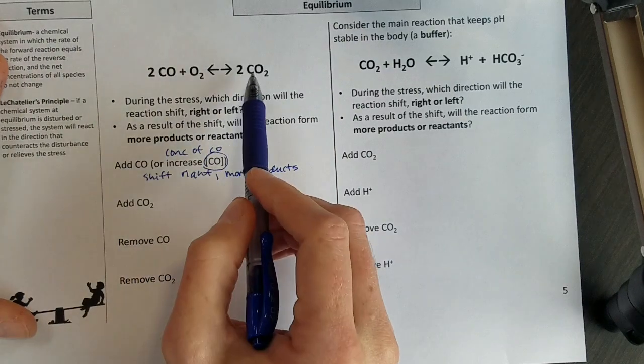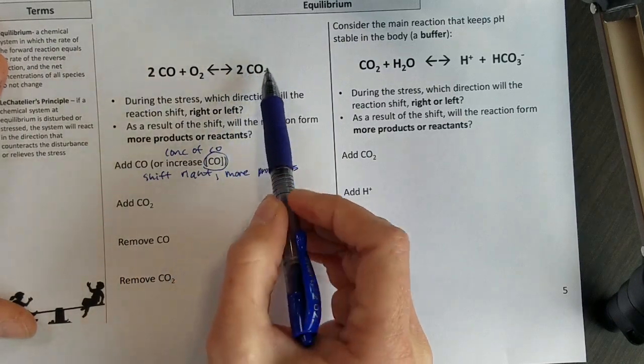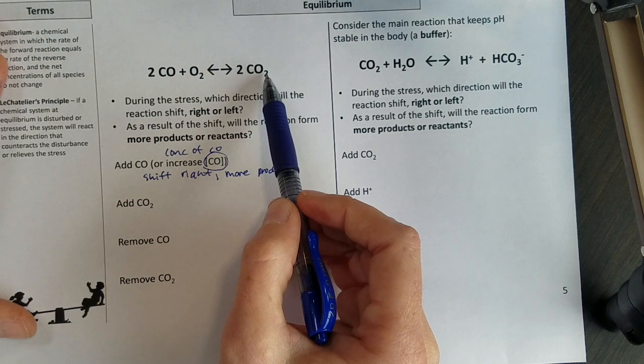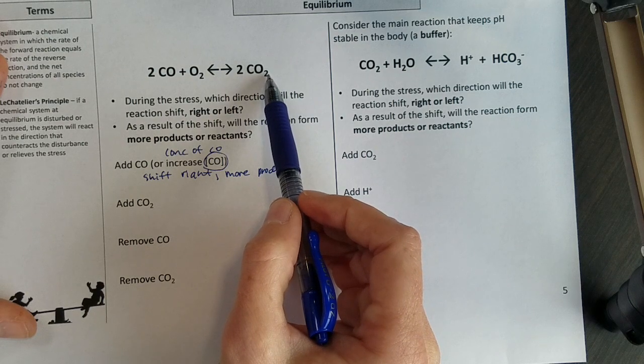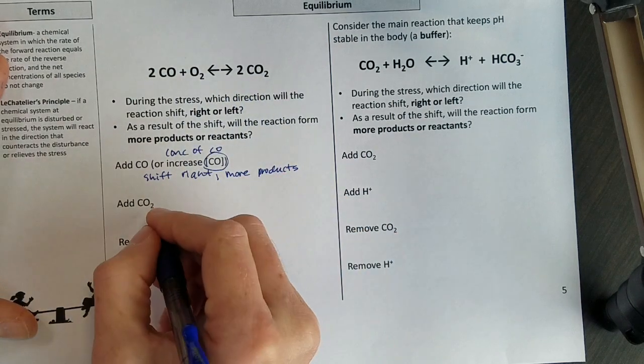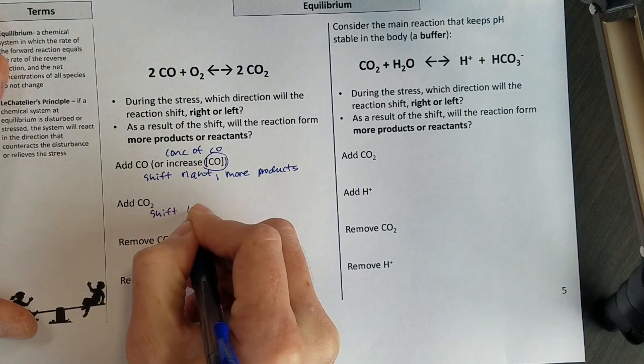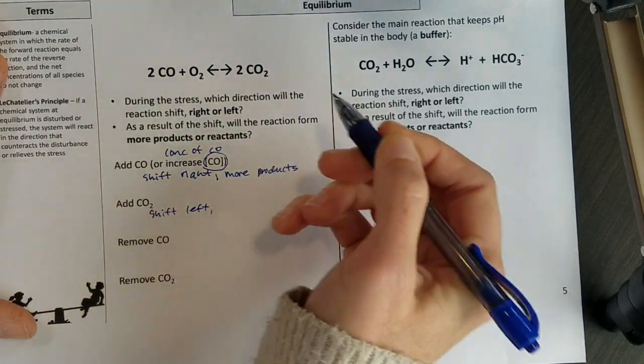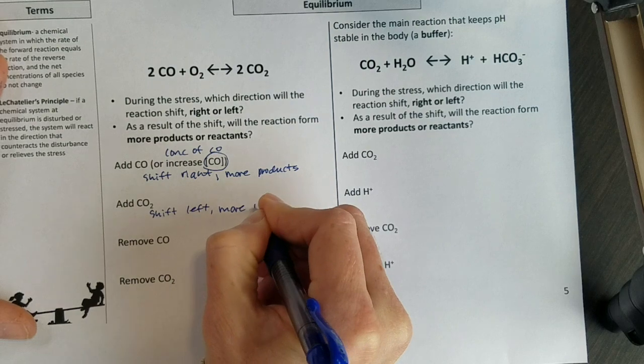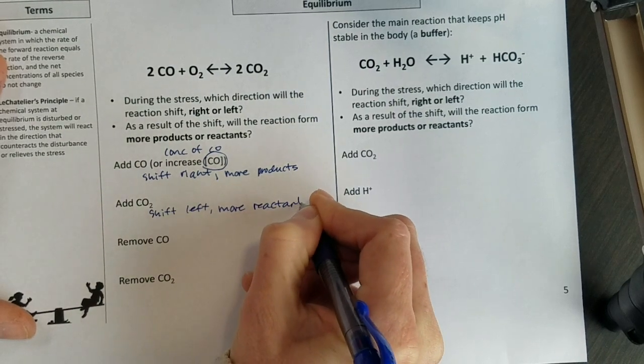If I add carbon dioxide, so I'm adding carbon dioxide, then I have too much on the right side, I need to shift to the left to use some of that up. And so when I shift left, I always make more reactants.